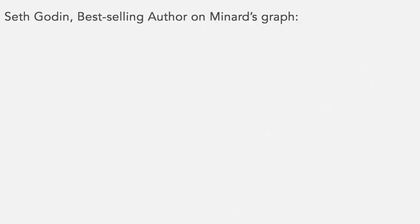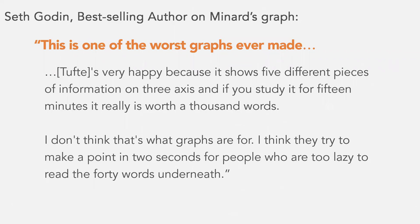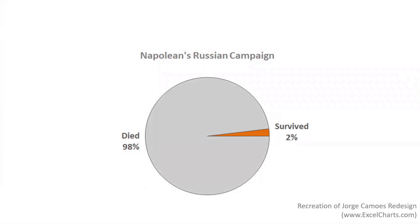Here's what Seth Godin said about Menard's graph: 'This is one of the worst graphs ever made. Tufte is very happy because it shows five different pieces of information on three axes. And if you study it for 15 minutes, it really is worth a thousand words. I don't think that's what graphs are for. I think they try to make a point in two seconds for people who are too lazy to read the 40 words underneath.' So here's a makeover from Jorge Camoes, a Portuguese data visualization expert who does incredible work in Excel and Tableau — just a pie chart: died, survived. Maybe that's what the executive really needs to see and not the thing that takes 15 minutes to explore.